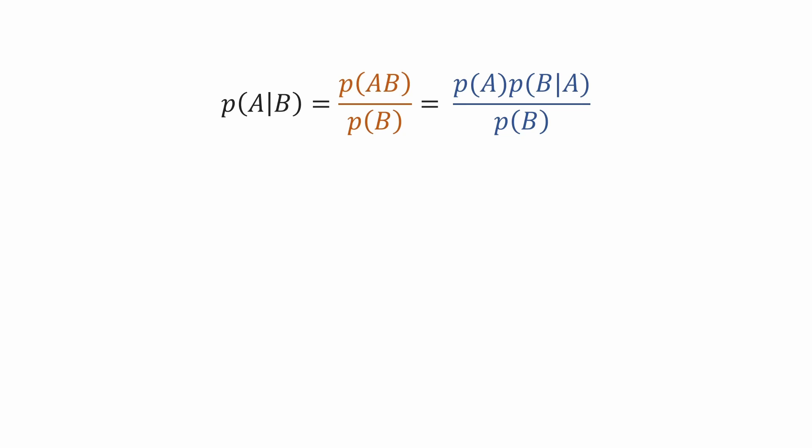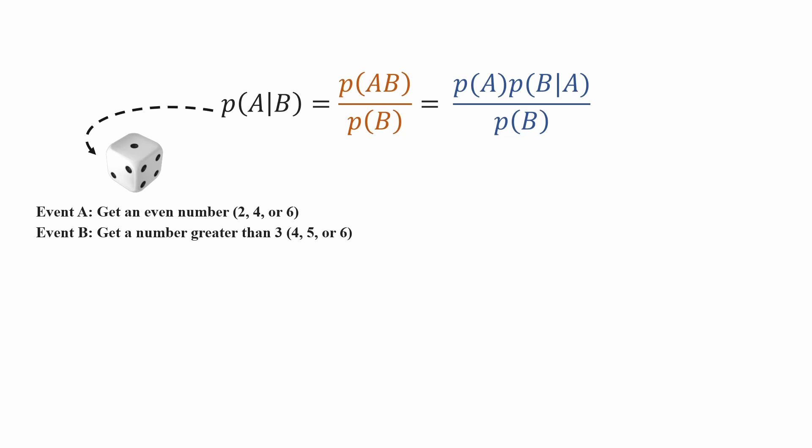Before going into the detail of sentiment analysis, let's get the basic idea about conditional probability. This is the formula statement that you often see. The basic idea — let's use an example: you are going to roll a die and define two events. Event A is that you get an even number; Event B is that you get a number greater than three. You can calculate the conditional probability of A given B, which is two over two-thirds.